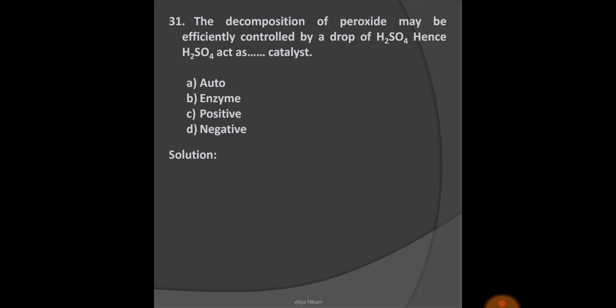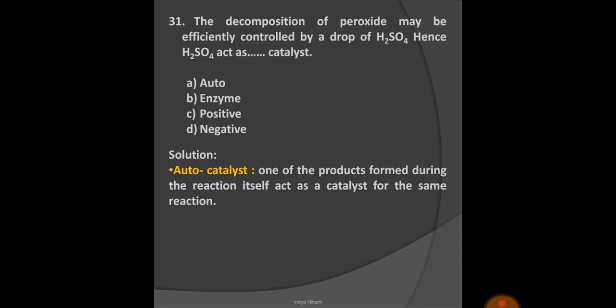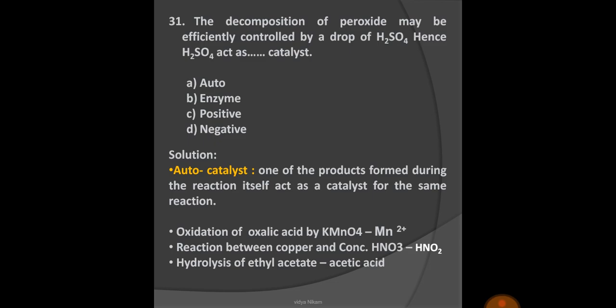Let us see one by one with examples. Autocatalyst catalyzes a reaction in which one of the products formed during reaction itself acts as the catalyst for the same reaction. For example, oxidation of oxalic acid by KMnO4, here Mn2+ ion acts as the autocatalyst. Reaction between copper and concentrated nitric acid, here HNO2 acts as the catalyst. Hydrolysis of ethyl acetate, in this reaction acetic acid for the reaction acts as the autocatalyst.